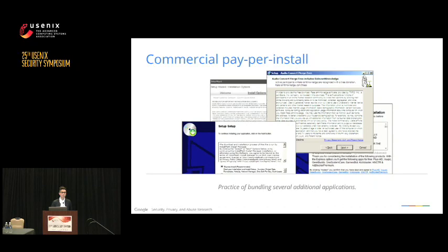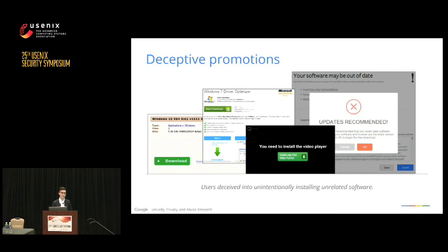So we started to look into this marketplace known as commercial pay per install. It's this practice of when you go and download a piece of software that will bundle several additional offers at install time. So if you go to download.com or any other popular download portal, it's very often you'll see one of these dialogues. While bundling in and of itself isn't an abusive practice, very often these consent dialogues are buried within walls of text or fail to accurately disclose the type of software that's going to be installed. Even worse, users often encounter these bundles through deceptive promotional practices — like a video site claiming your codec is out of date, or a torrent site where the most prominent download button is actually an advertisement leading to unwanted software.